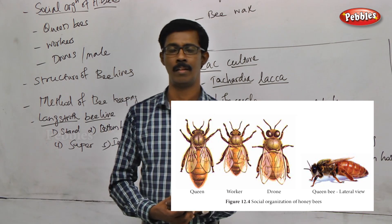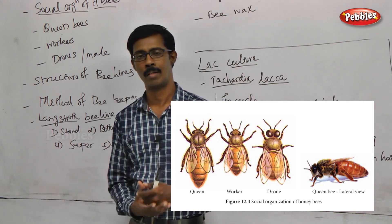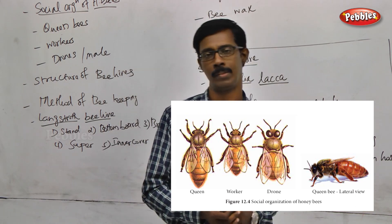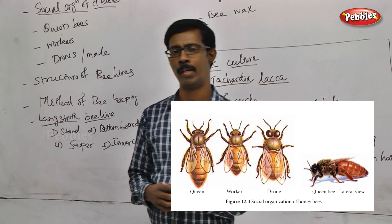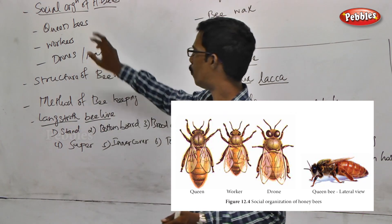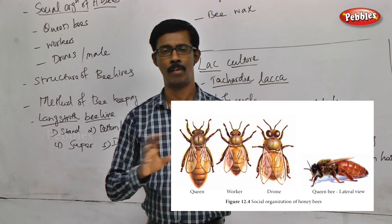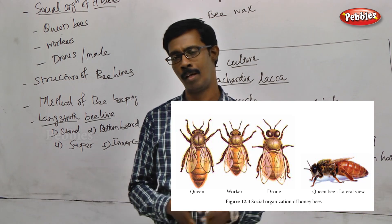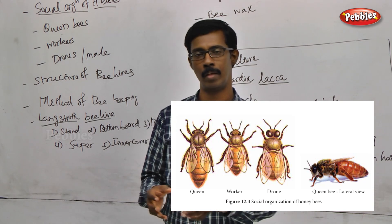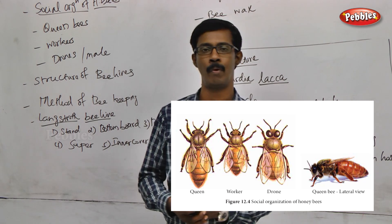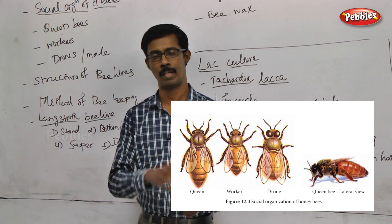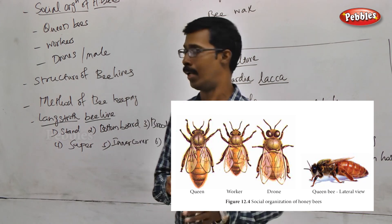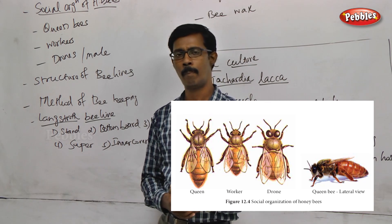The remaining bees are produced from the queen. The second type of bee is the worker bee. Worker bees are female bees. They perform various tasks inside the hive.